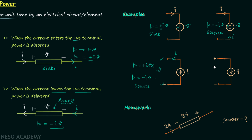In the fourth example, current is entering the negative terminal inside the element. If the voltage is V, then the power equals +IV and the element acts as a sink.